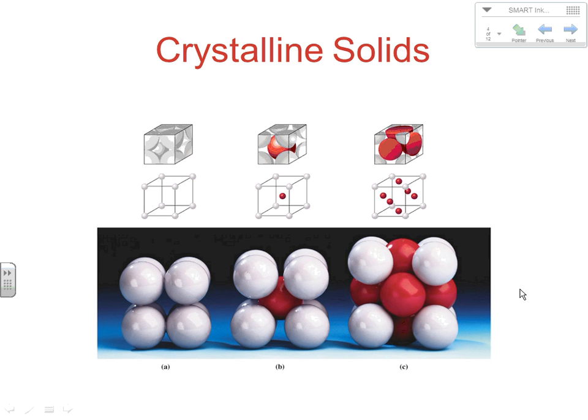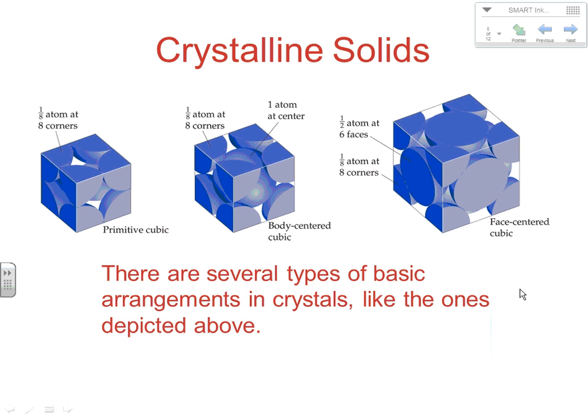When we carve out our cube, not all of the atoms you see are totally inside that box, and there are implications to that. In a primitive cubic, you have one at each corner. If you slice at the corner, you really have an eighth of an atom at each corner. Since we have eight corners on our box, that's a total of one atom actually inside the unit cell.